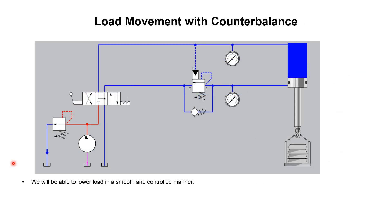To solve this problem we add a counterbalance valve. The basic definition is that a counterbalance valve is used to avoid the overrunning of the load during movement. This counterbalance valve is composed of two components: the first is the free flow check valve, and the second is the pilot operated pressure check valve. The free flow check valve provides unidirectional flow, while the pilot operated pressure check valve allows fluid passage only at a certain preset pressure value.